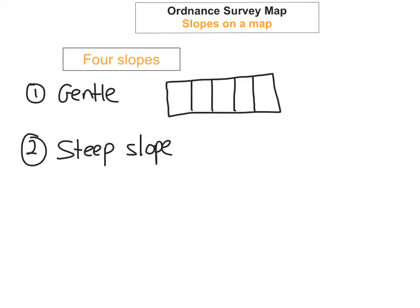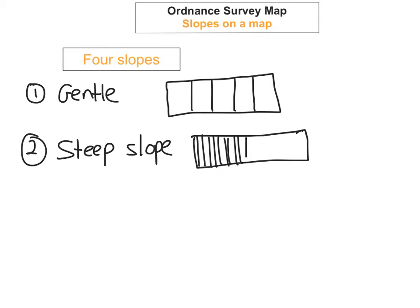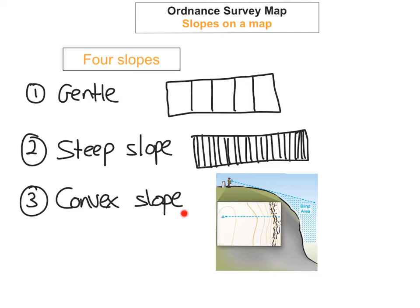The second type is a steep slope. This is when contour lines are very close together. As you can see in this drawing here, the contour lines are very close together, which means the slope is very steep.